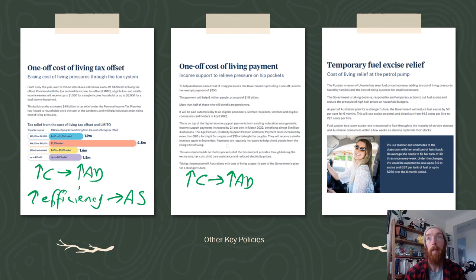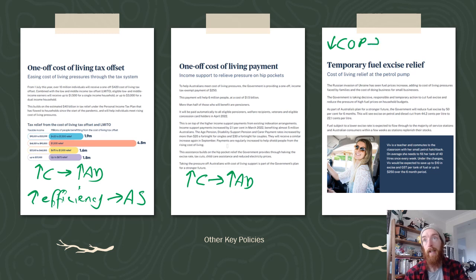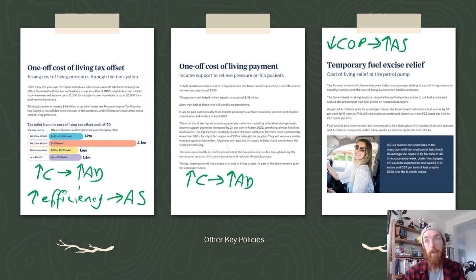They've also got temporary fuel excise relief, and this can go two ways. It's going to be a decrease in cost of production for businesses, therefore improving aggregate supply. However, for consumers, it means lower expenses — meaning there's more money left over for consumption spending as fuel becomes less of an expense for households, which can increase consumption spending and aggregate demand. Note that the government will also be collecting less tax as a result.